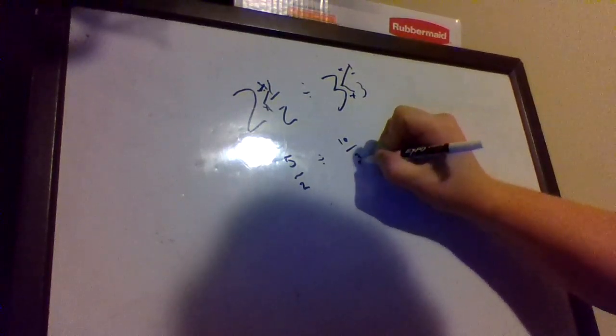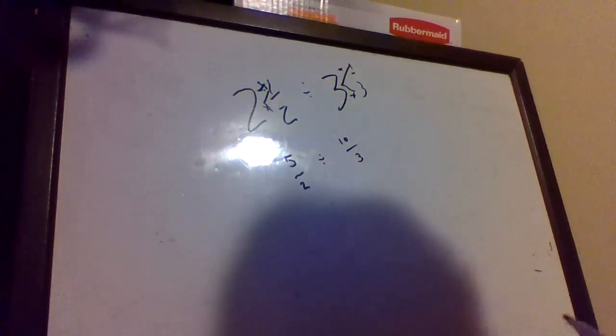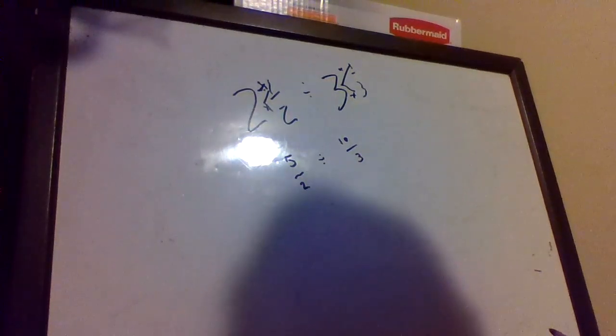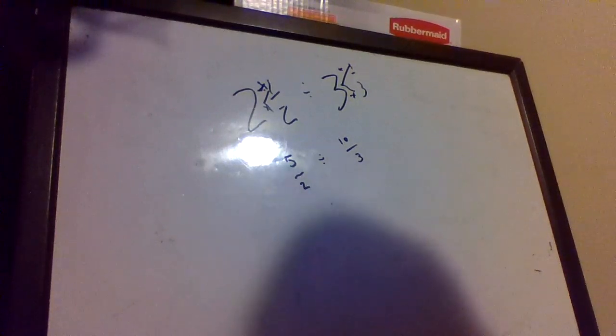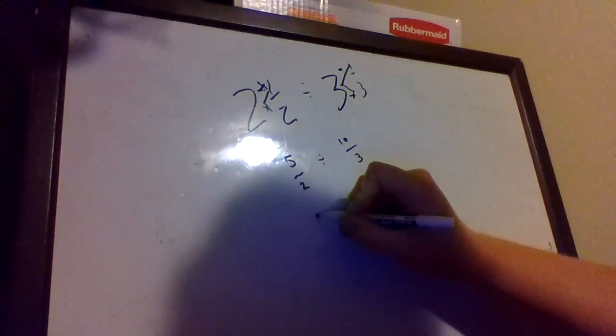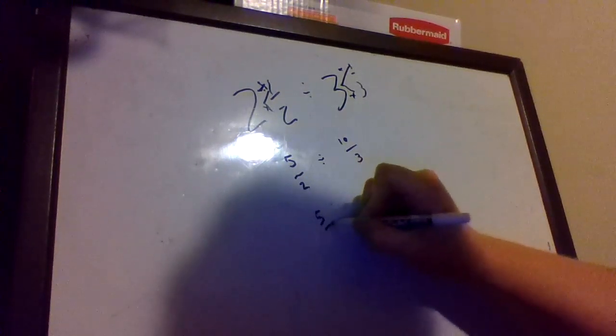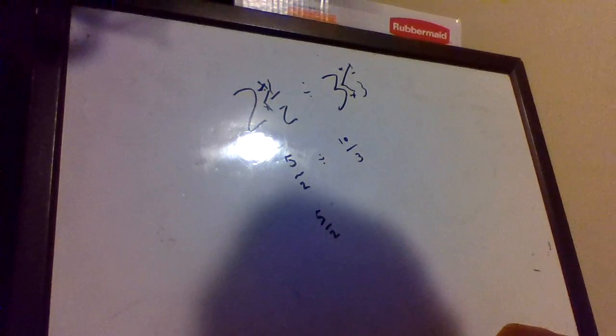Okay, so now we've got our mixed numbers out of the way. So we're going to keep change flip, why? Because that's the action everybody's going to know for dividing fractions. So we keep the first one: 5 over 2. We change division to the opposite, so what's the opposite of division? Multiplication.